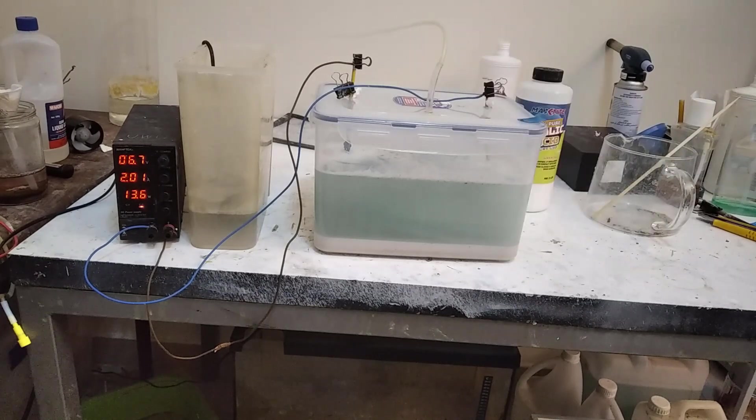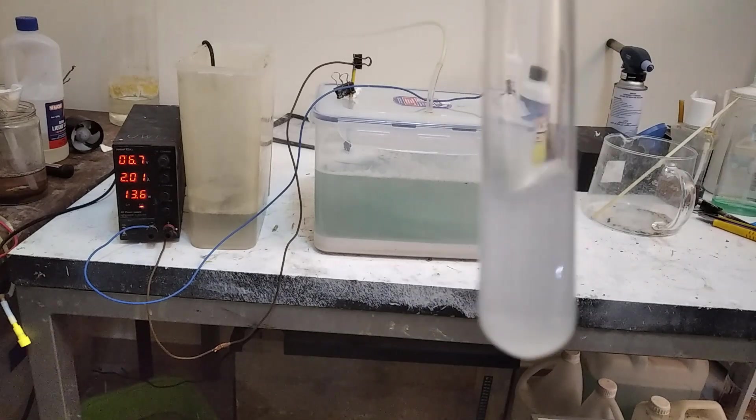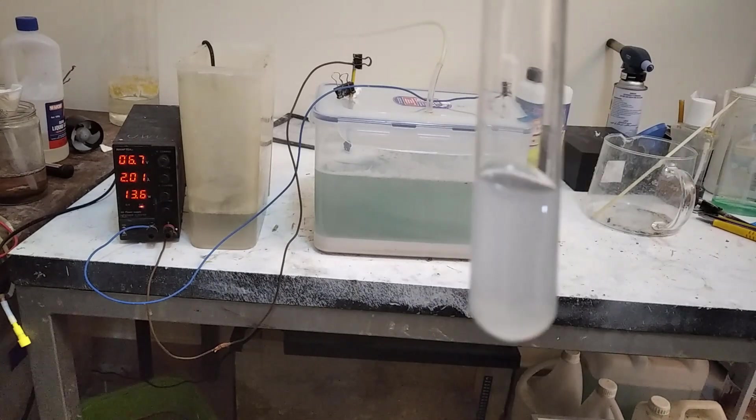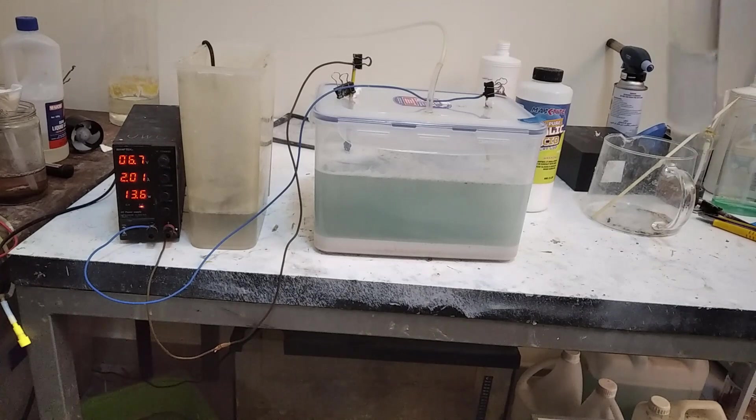This white precipitate forming is something known as lead oxalate. Now if you took your solution from there and it forms this kind of a precipitate, it means that you need to add more sodium hydroxide or carbonate in order to ensure that everything is precipitated.